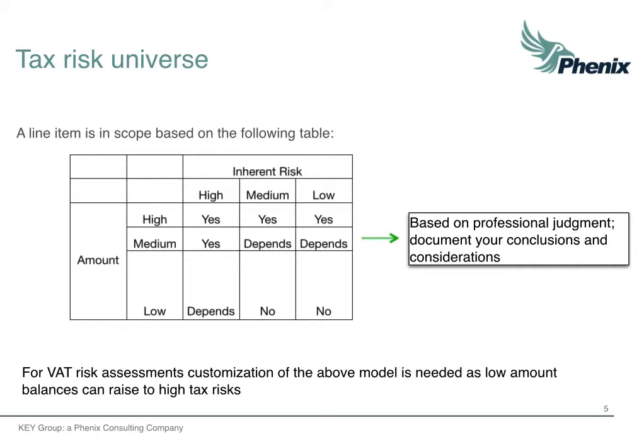If materiality risk is considered low and the inherent risk as well, then the result is that the risk is not considered in scope — the bottom right cell. For a certain combination, the decision tree shows 'depends,' and it is up to the organization to conclude about the scoping. This decision needs to be properly documented with the considerations that have been taken into account.